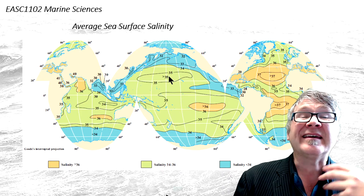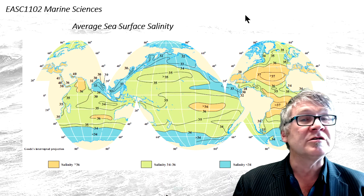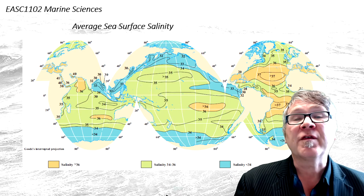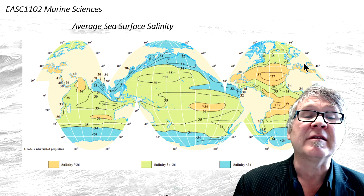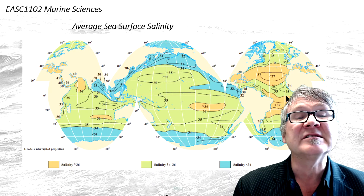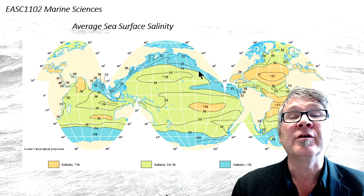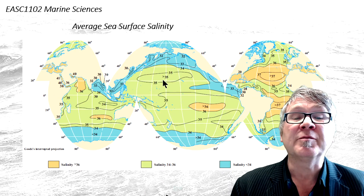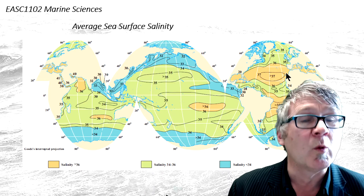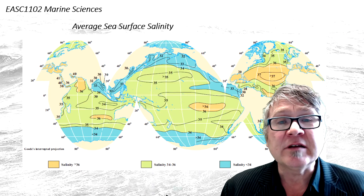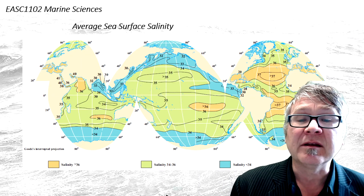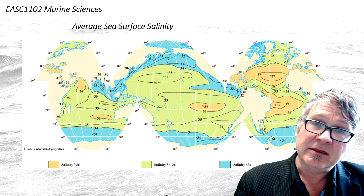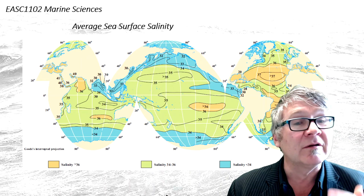The key difference between ocean surface salinities is between the North Atlantic and the North Pacific. The North Atlantic has significantly higher salinities compared to the North Pacific, which has much more fresh water. That is one of the main reasons why deep ocean circulation starts in the North Atlantic and not in the North Pacific — it's the North Atlantic that kicks off the deep circulation in the ocean.